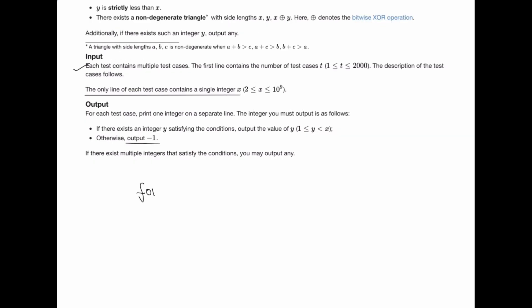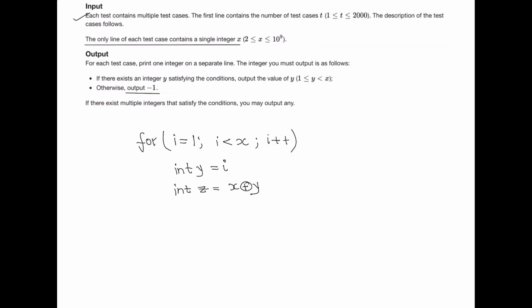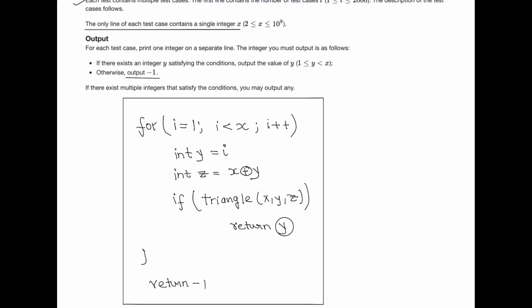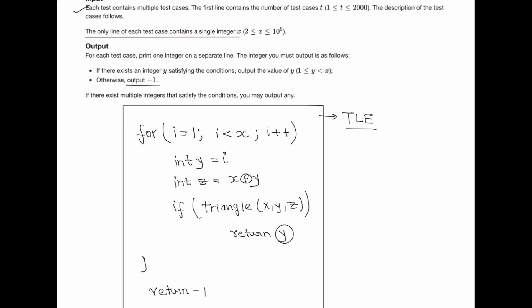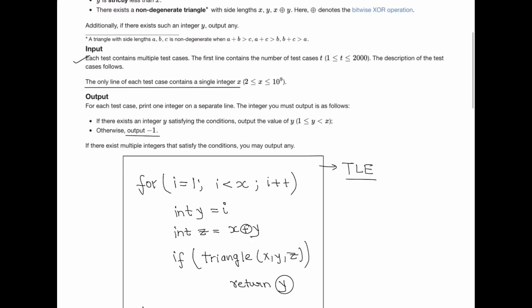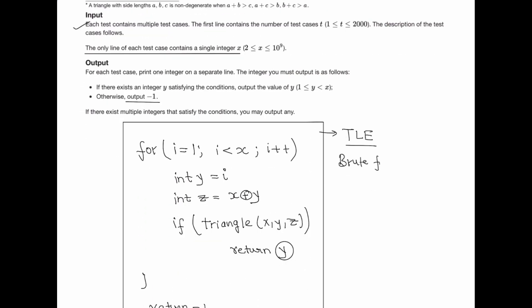One brute force that comes to mind is to run a loop from 1 to less than x. For each i, set y equal to i and let the other side be x XOR y, then check if a triangle can be formed using those sides. If yes, y is our answer; if the loop ends without finding one, return minus one. However, this gives a TLE error because x can be up to 10 to the power of 9, so we can't check all possibilities.